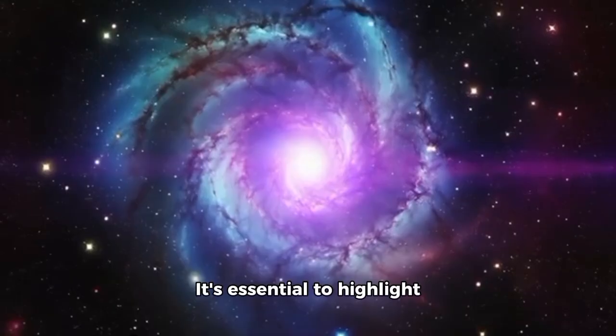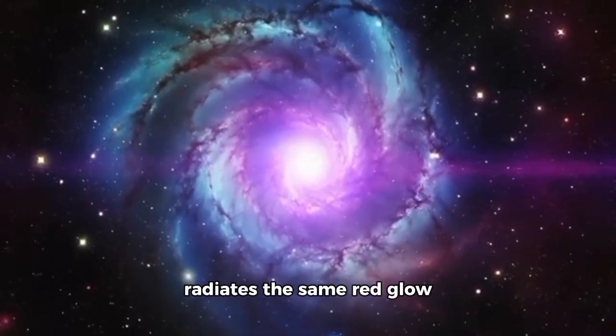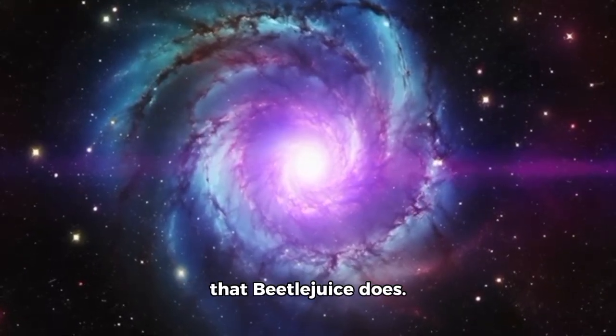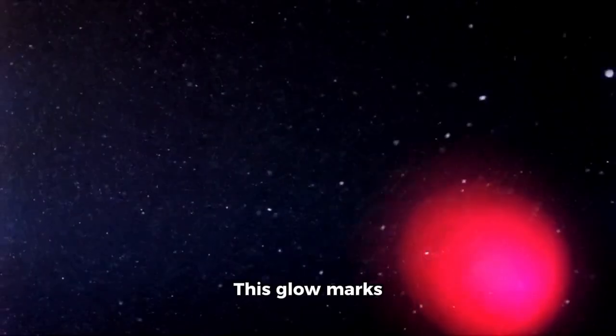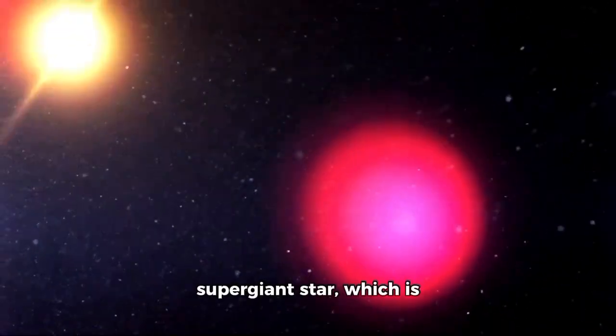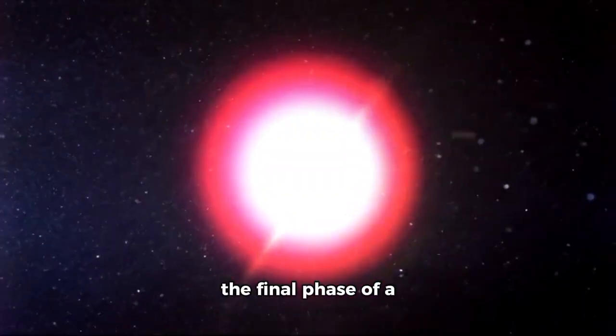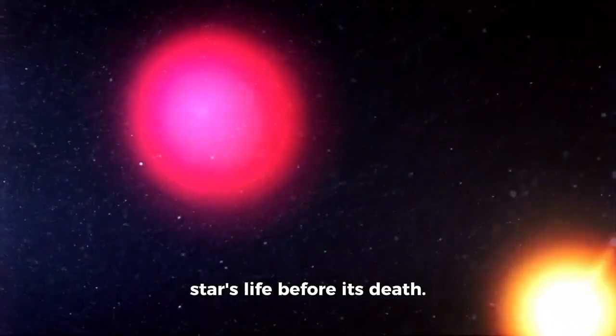It's essential to highlight that not every star radiates the same red glow that Betelgeuse does. This glow marks Betelgeuse as a red supergiant star, which is the final phase of a star's life before its death. This red hue is the result of a temperature around the surface of 3,500 Kelvin, significantly cooler than the outer layer of the sun, which is around 5,500 Kelvin.